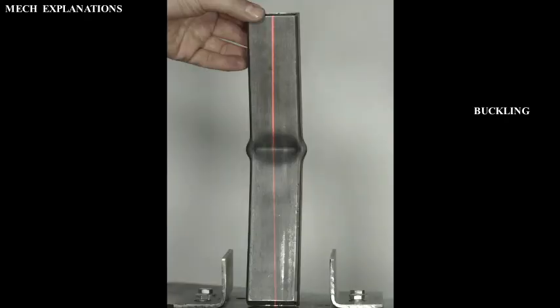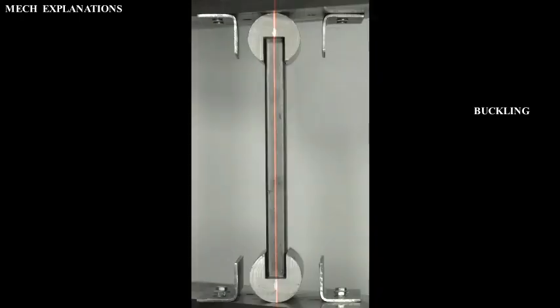As an applied load is increased on a member, such as a column, it will ultimately become large enough to cause the member to become unstable and it is said to have buckled.